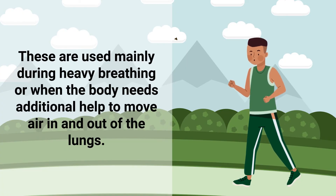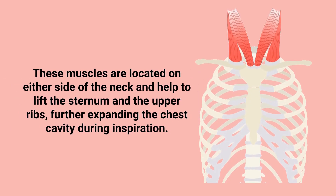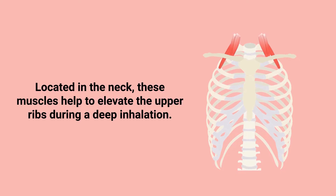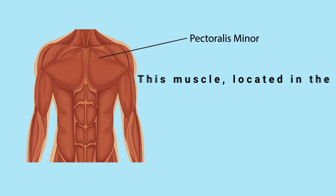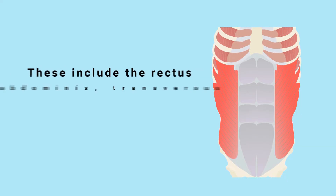The accessory muscles are used mainly during heavy breathing or when the body needs additional help to move air in and out of the lungs. These include the sternocleidomastoid, located on either side of the neck, which helps lift the sternum and upper ribs to further expand the chest cavity during inspiration. The scalene muscles, located in the neck, help elevate the upper ribs during deep inhalation. The pectoralis minor, located in the chest, also assists in elevating the ribs during a forceful inhalation.